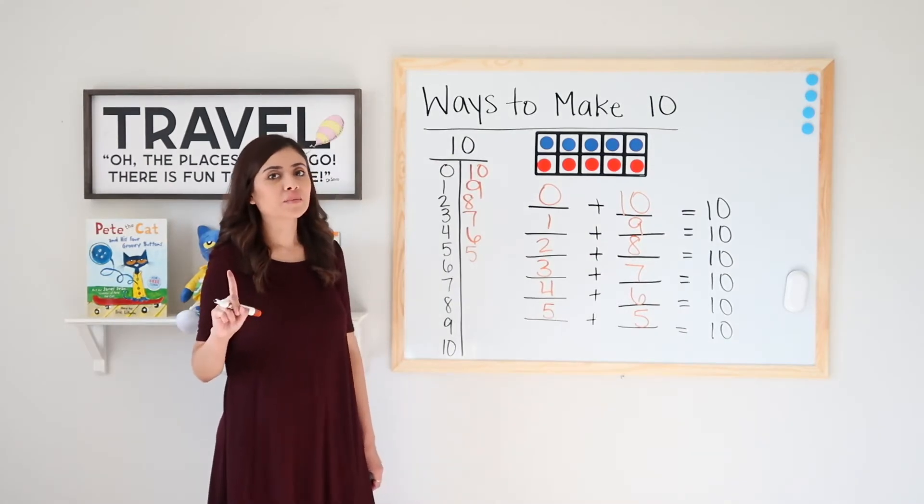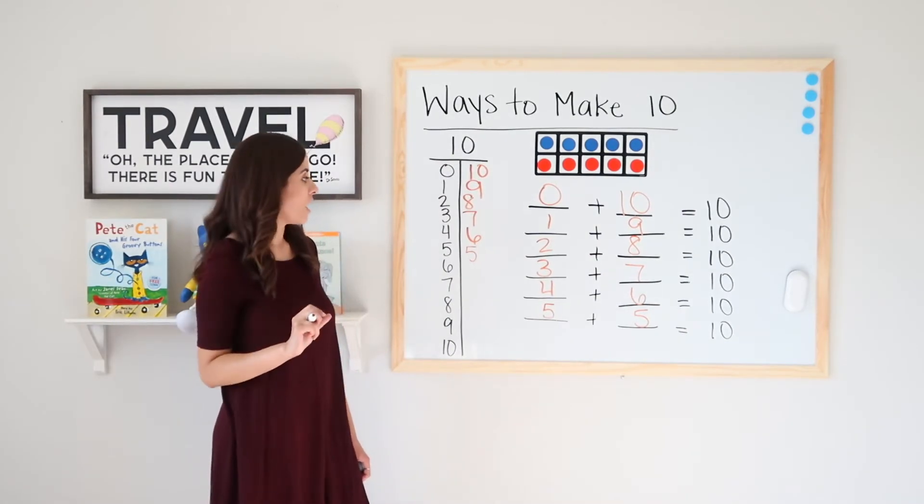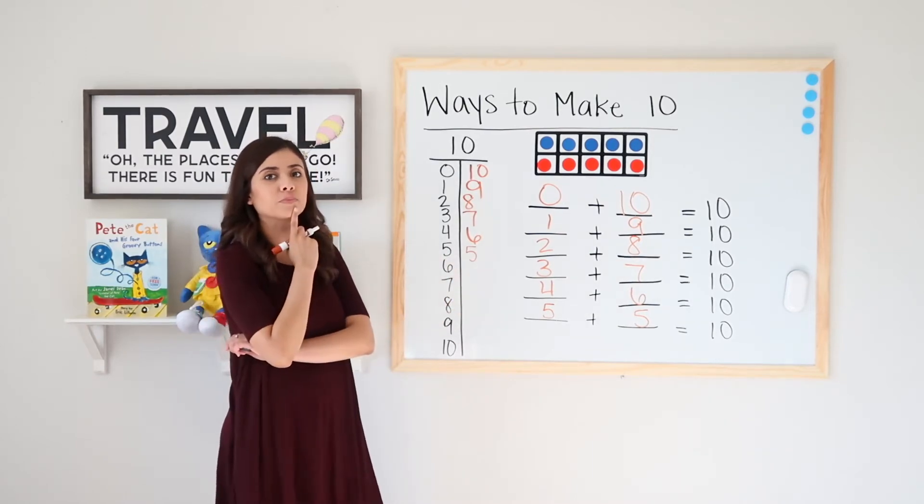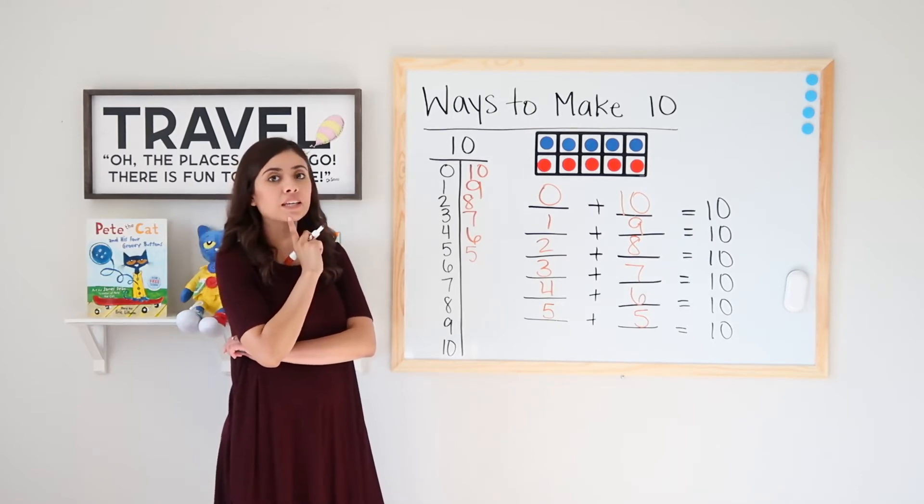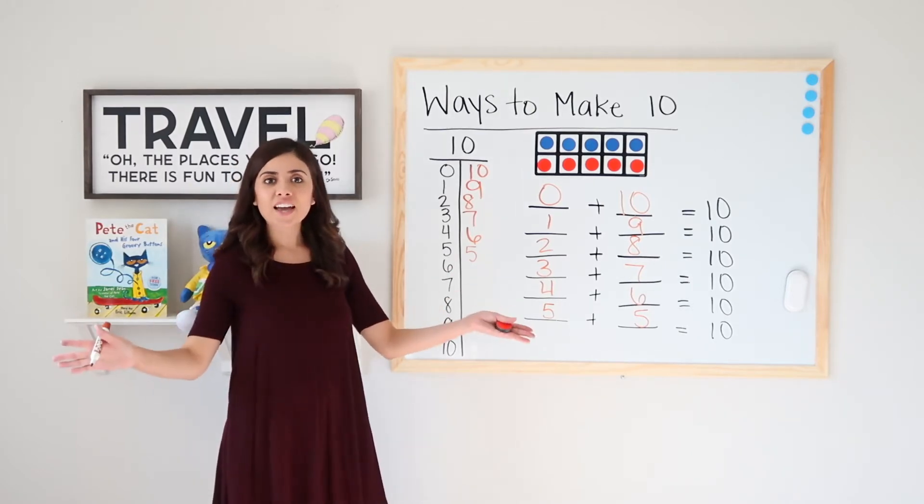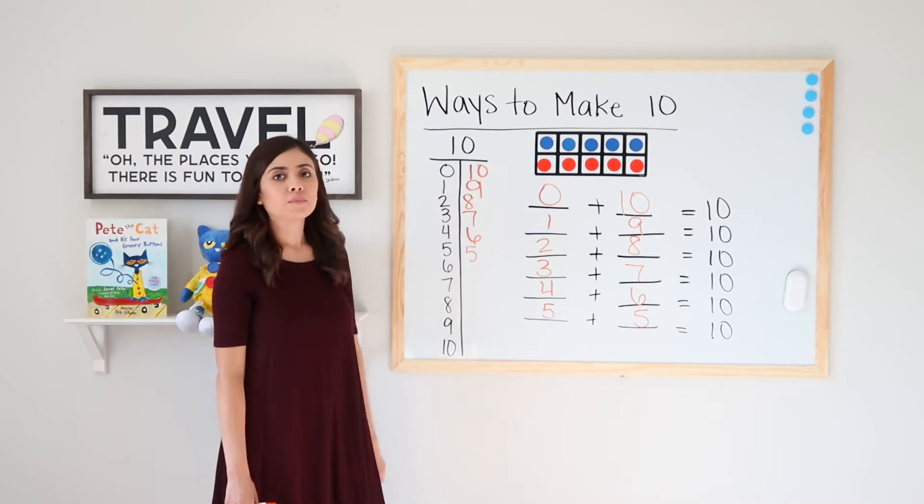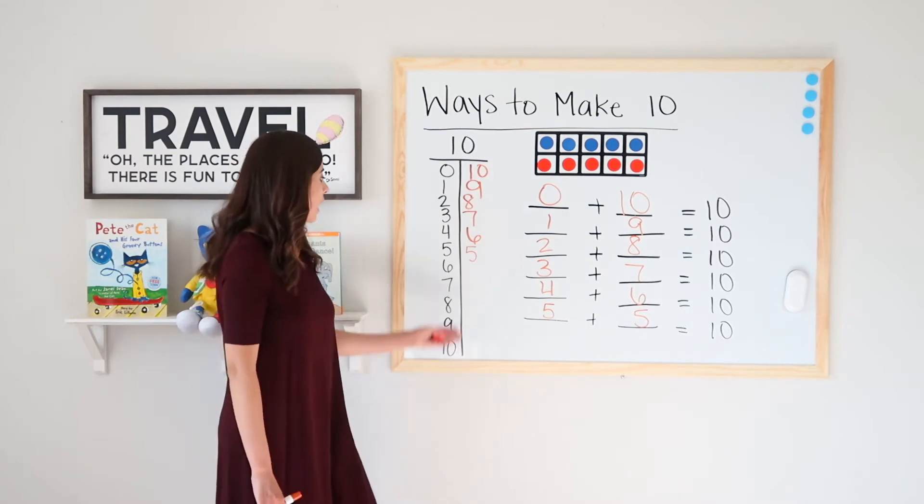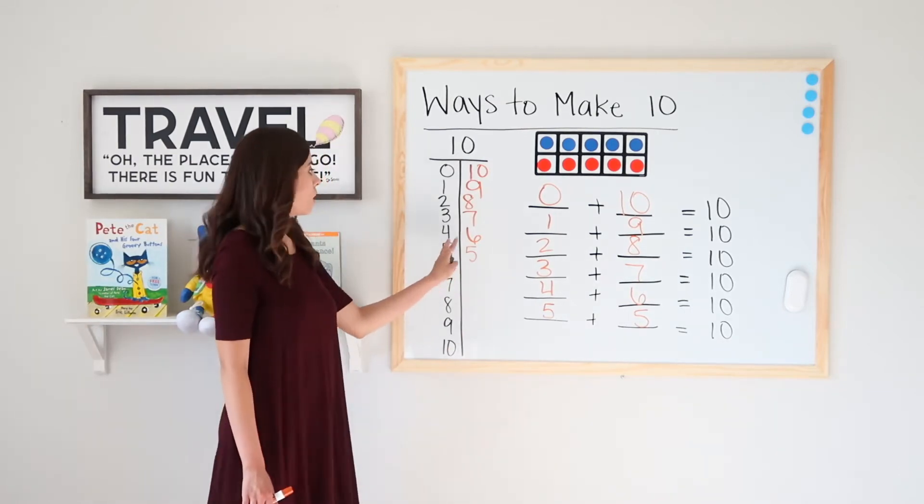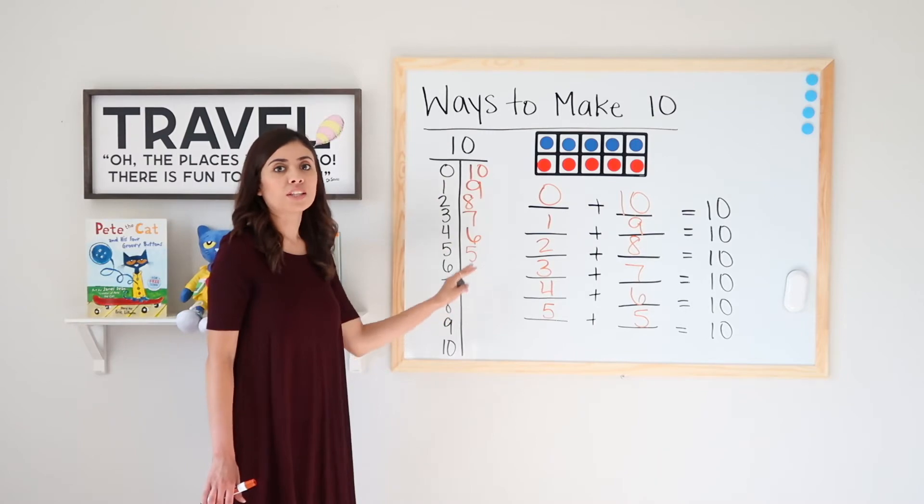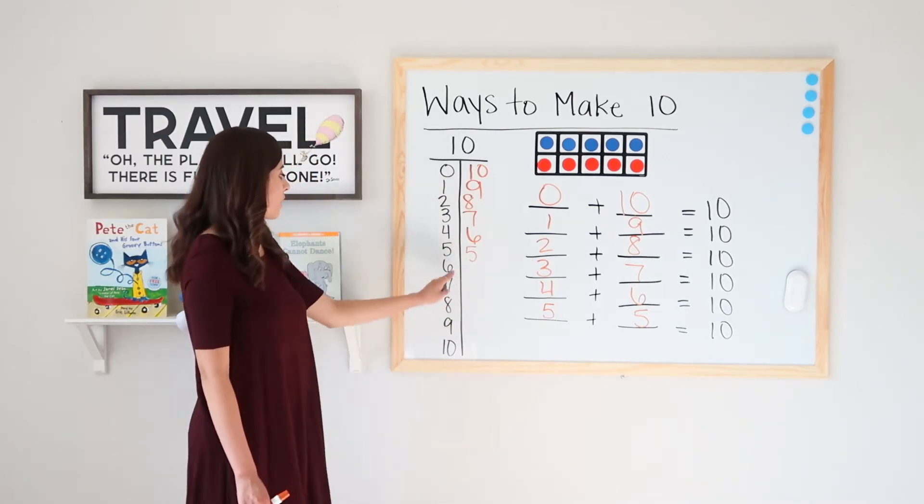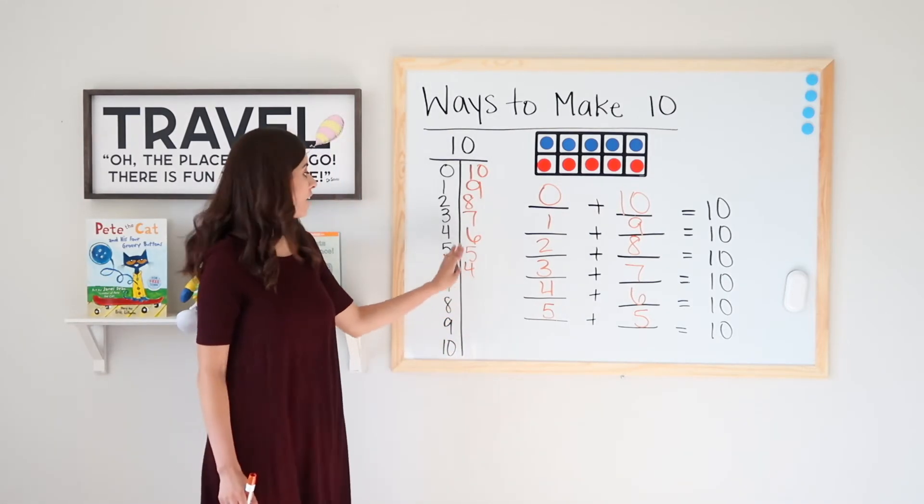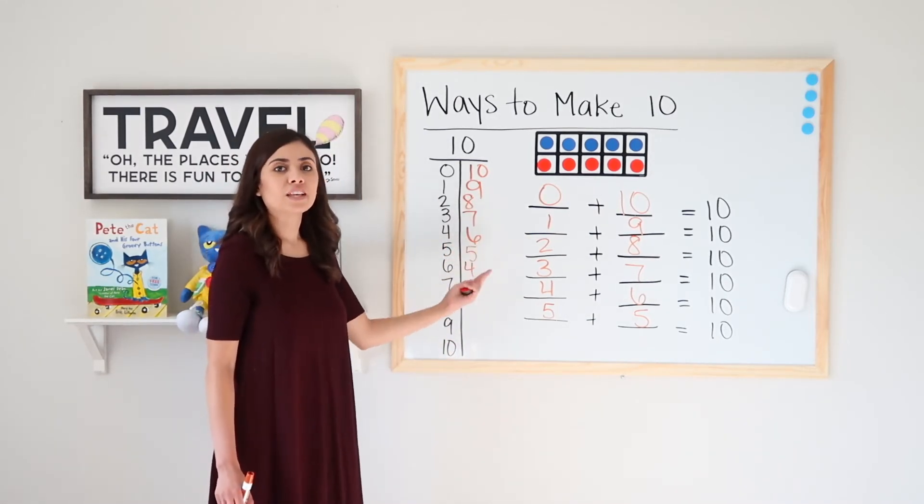Hey, did you catch something? Because I know I did. I have the same number on both sides. What does that mean? That means that I am done. I don't have to keep going any further because I already found all the ways to make the sum of ten. I could keep going, but all I would find is what I already have up here only flipped. If I kept going, I would have six plus four. I already have four plus six. It's the same thing only flipped.